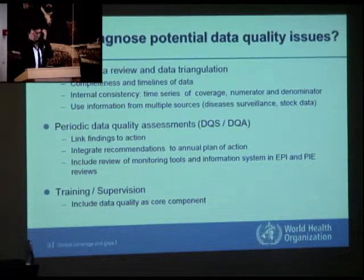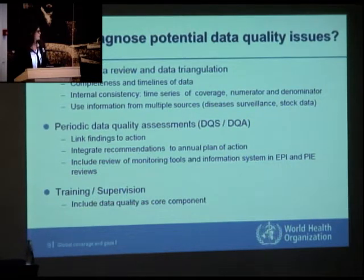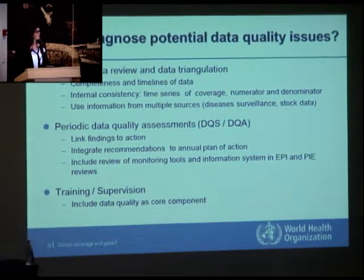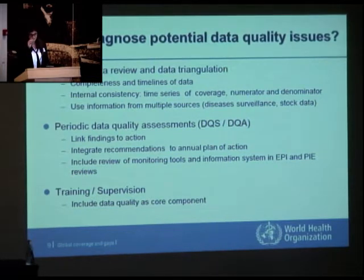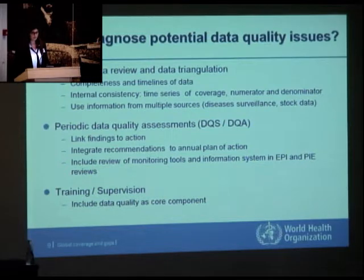What can we do to ensure the data used for managing the program is appropriate quality and correctly interpreted? There are fairly simple things, such as regular data review and data triangulation. Things like ensuring completeness and timeliness of data, making sure data is internally consistent, not looking only at a single data point but at the time series, looking separately at the numerator and denominator and not only at coverage, and using information from multiple sources — matching coverage data with disease surveillance and SOC data to look at plausibility.